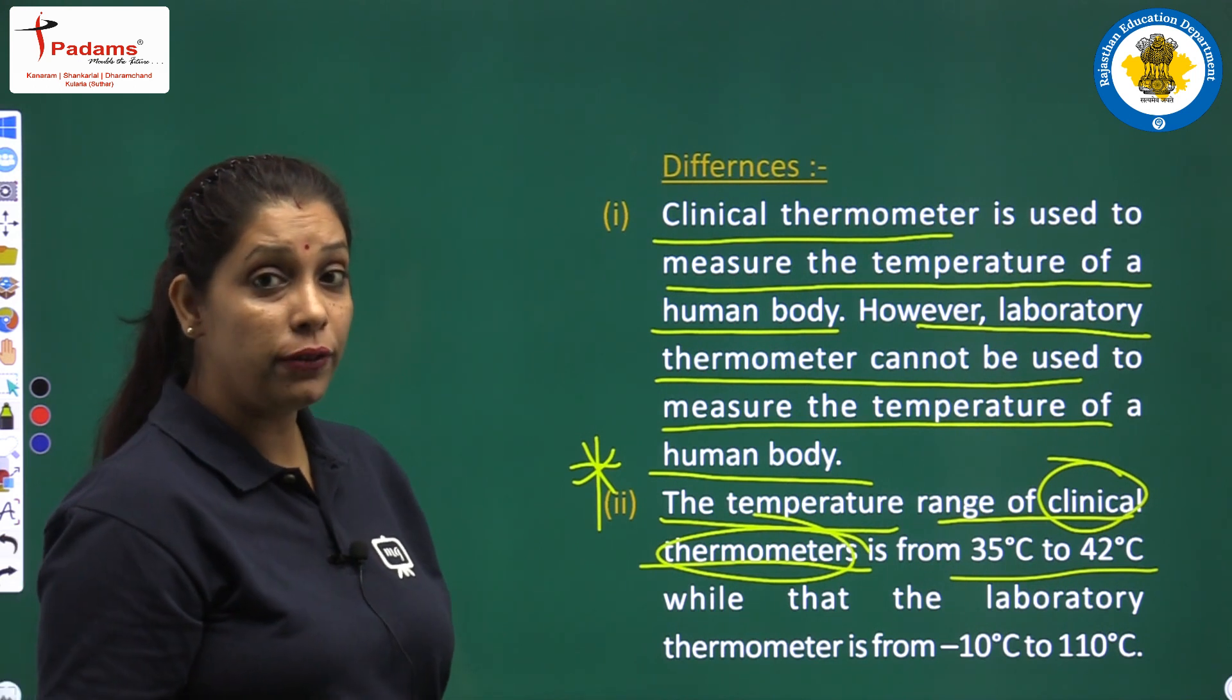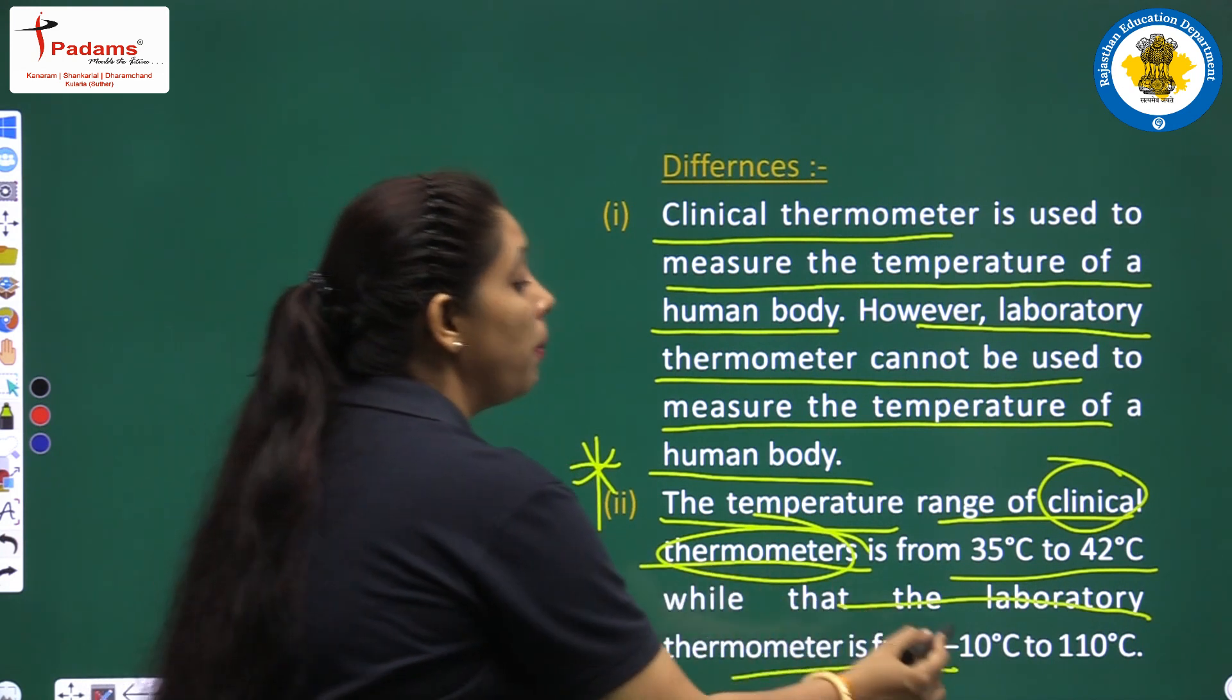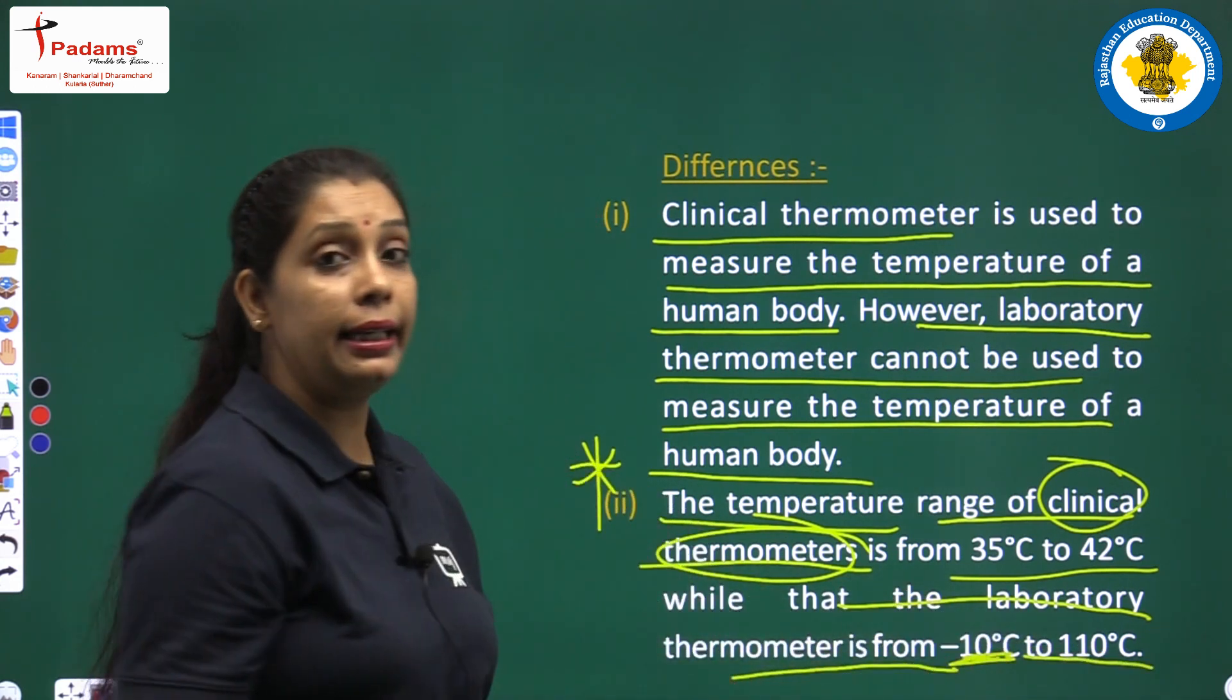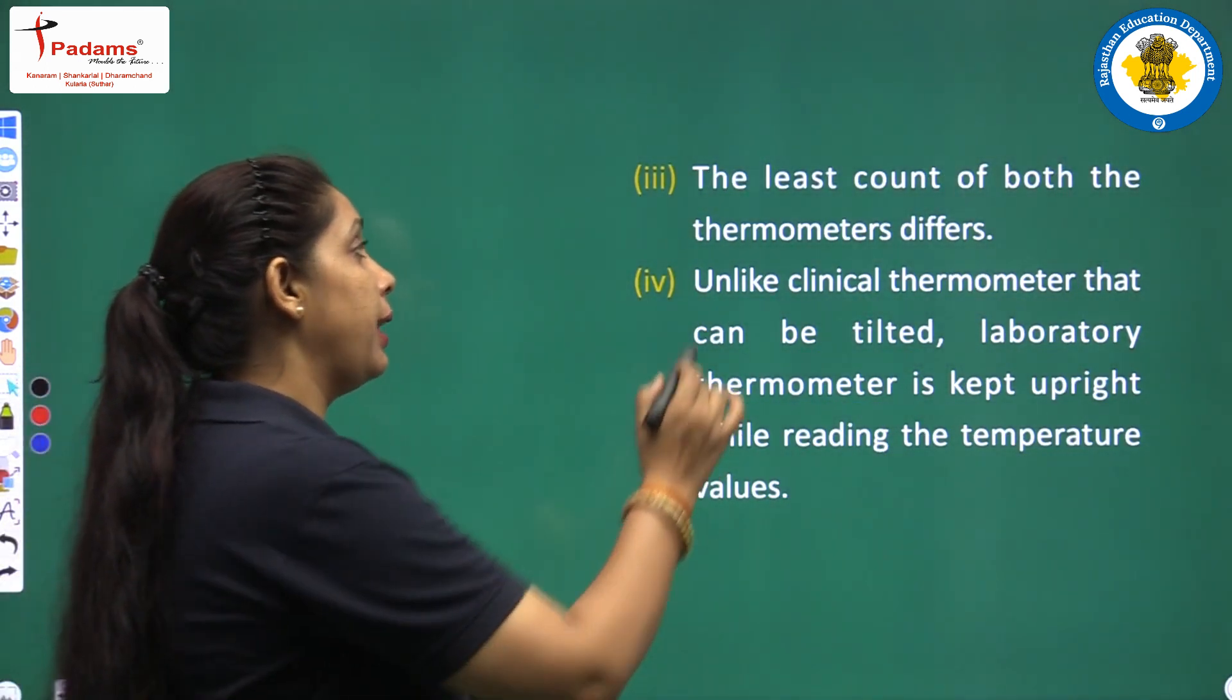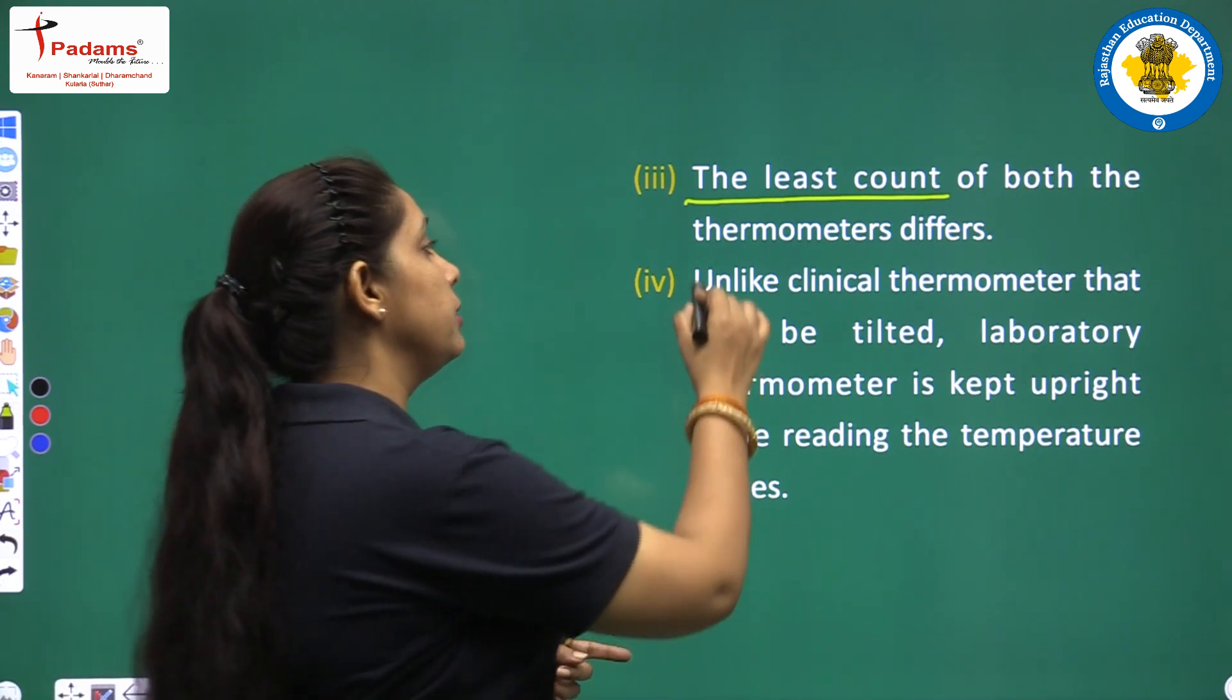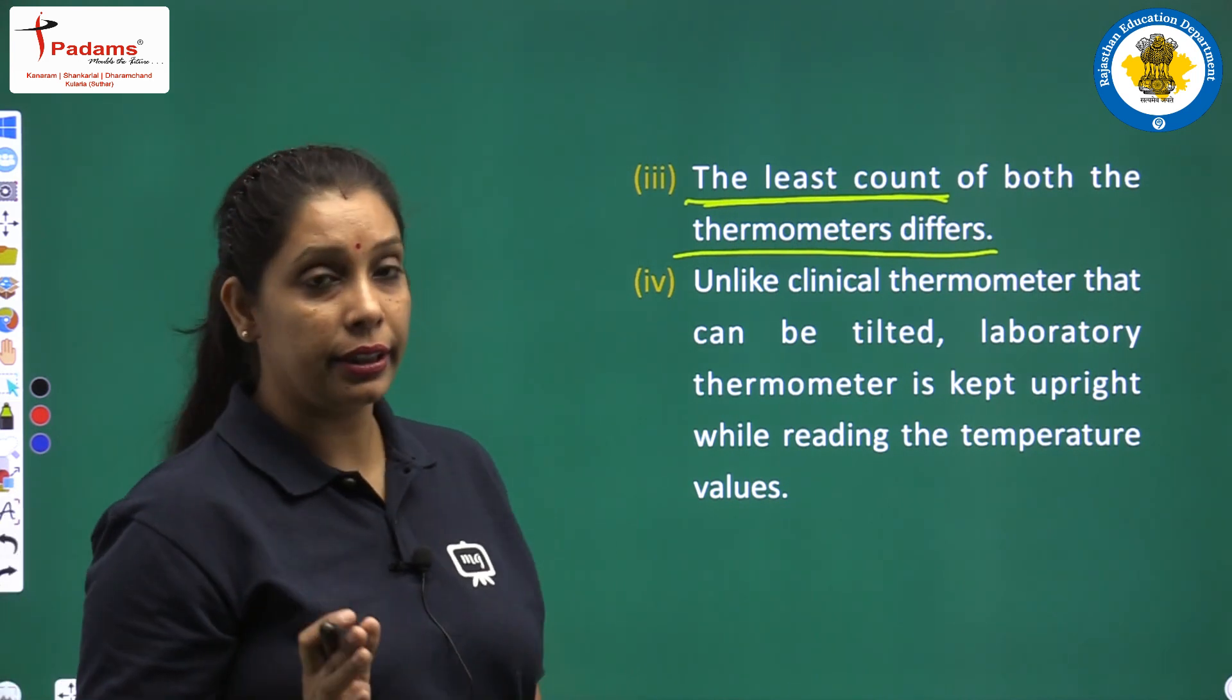And what is the range of laboratory thermometer? The laboratory thermometer is from minus 10 degrees Celsius to 110 degrees Celsius. Is it clear to everyone? What are the other differences? The next one is the least count of both the thermometers differs.